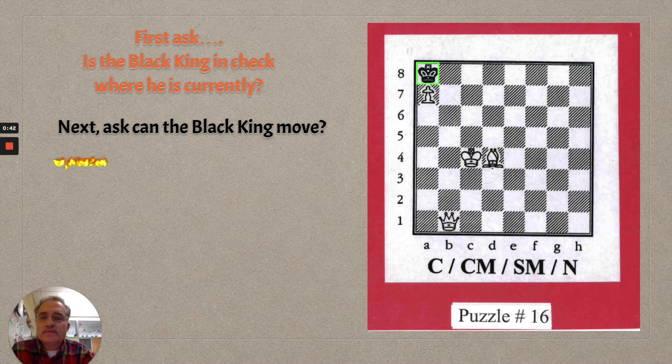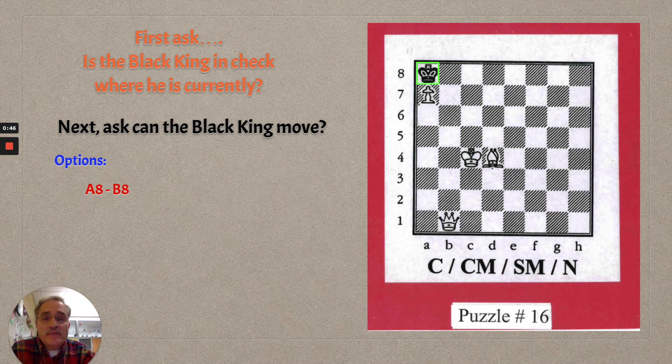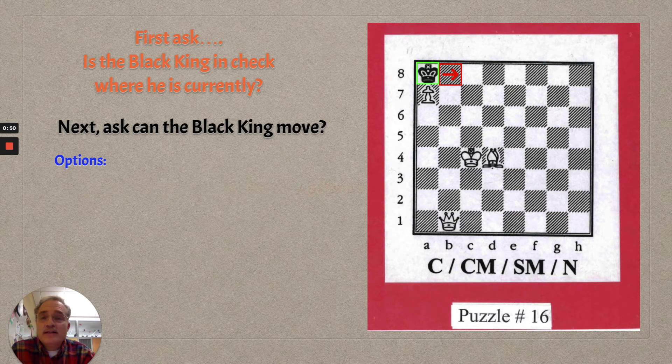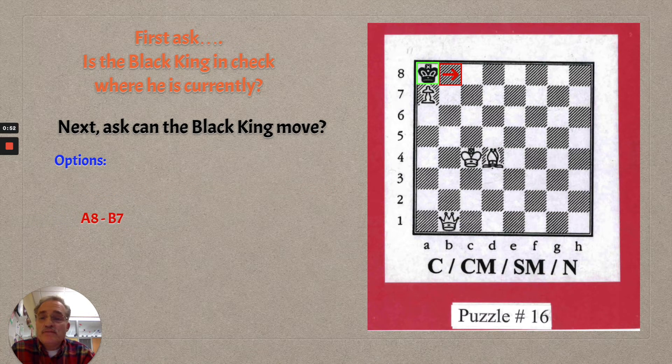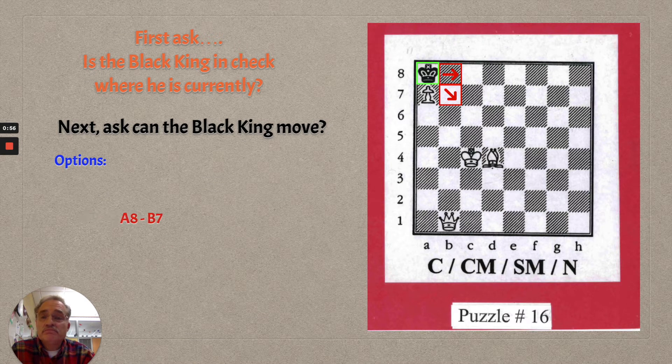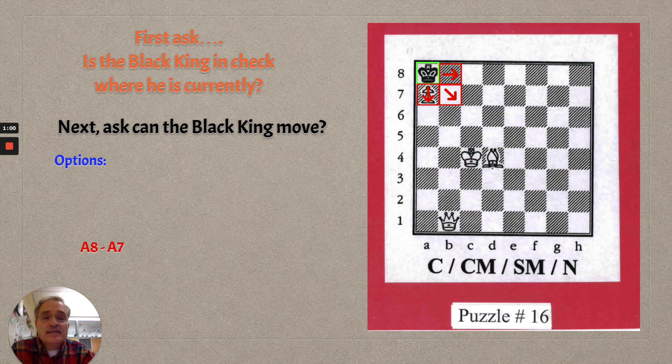Some options for moving are from a8 to b8. Another option is a8 to b7, and the last option is a8 to a7, which captures the white pawn.